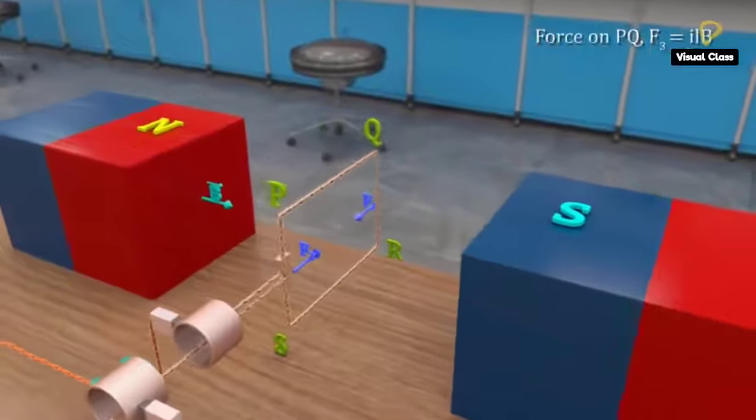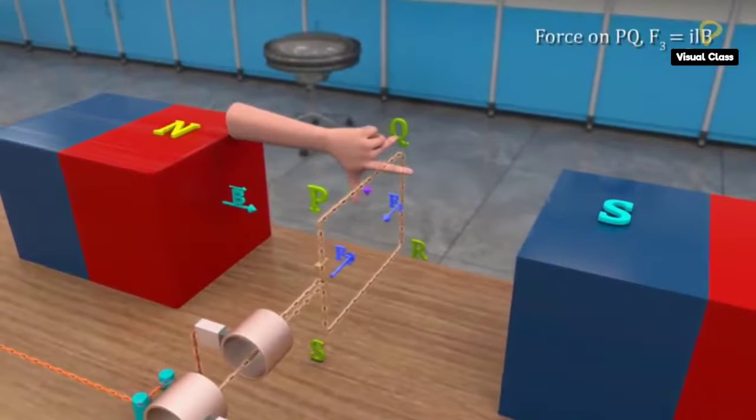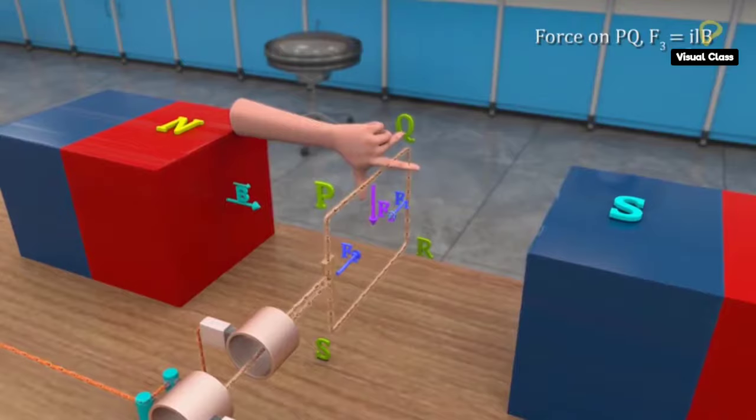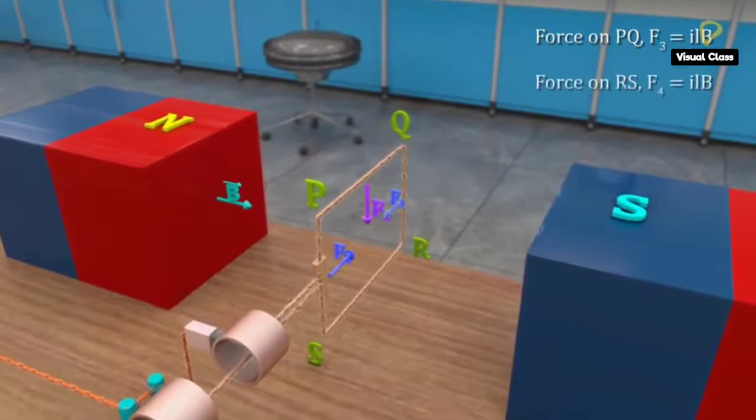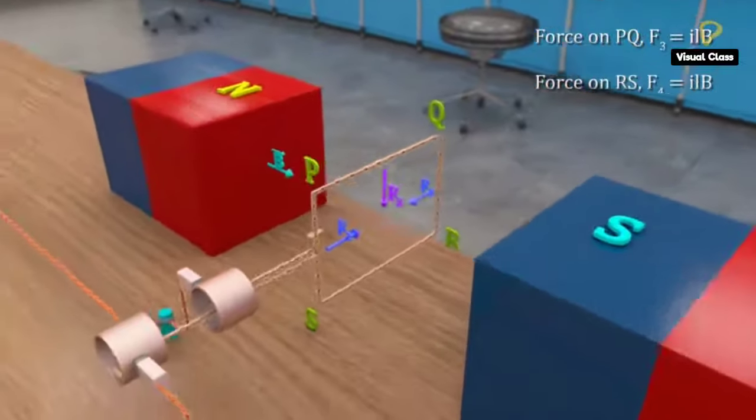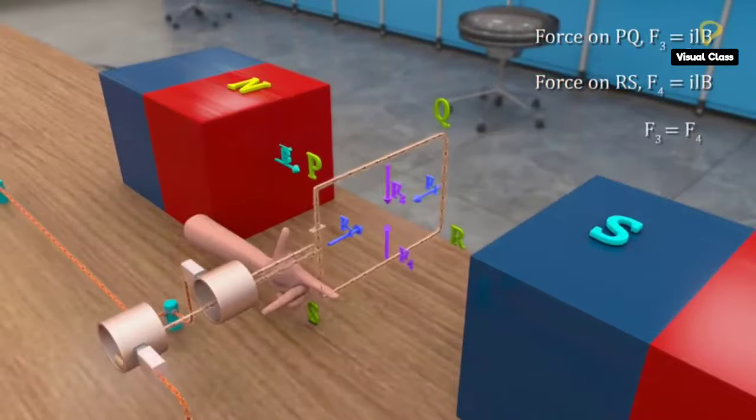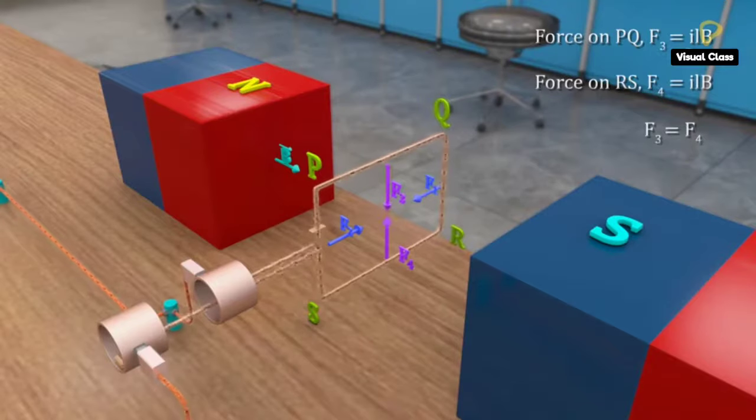Similarly, force on PQ F3 equal to ILB is same in magnitude, but opposite in direction to that of force F4 on RS. Since the line of action is the same for both forces, they have no effect on the loop.